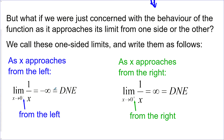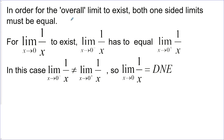But at least we have some more information here. In order for the overall limit to exist, both one-sided limits must be equal. Coming from either side, they both need to approach the same value — we can now call them one-sided limits. So for the limit of 1 over x as x approaches 0 to exist, the left limit has to equal the right limit. In this case they don't, so the overall limit does not exist.